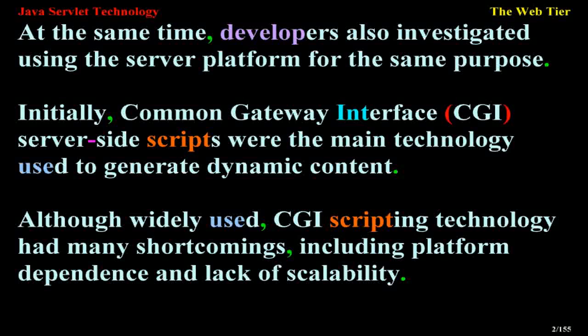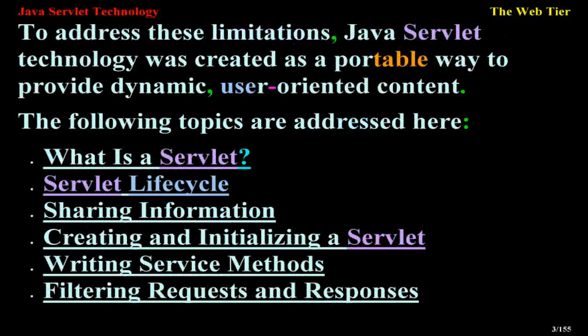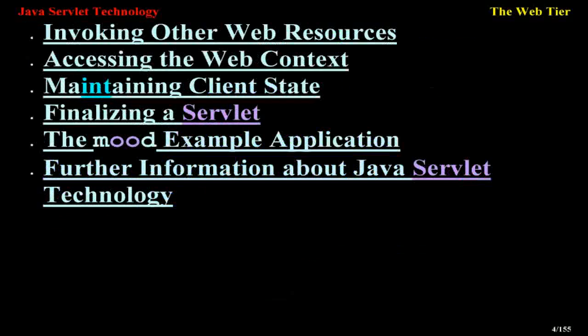Although widely used, CGI scripting technology had many shortcomings, including platform dependence and lack of scalability. To address these limitations, Java server technology was created as a portable way to provide dynamic, user-oriented content. Topics addressed here include: what is a servlet, servlet lifecycle, sharing information, creating and initializing the servlet, writing service methods, filtering requests and responses, invoking other web resources, accessing the web context, maintaining client state, finalizing the servlet, the mood example application, and further information about Java servlet technology.